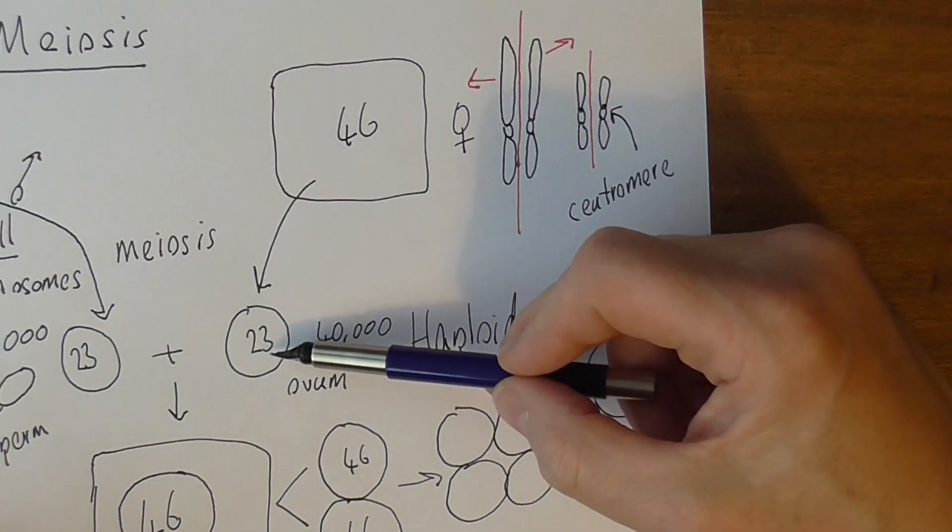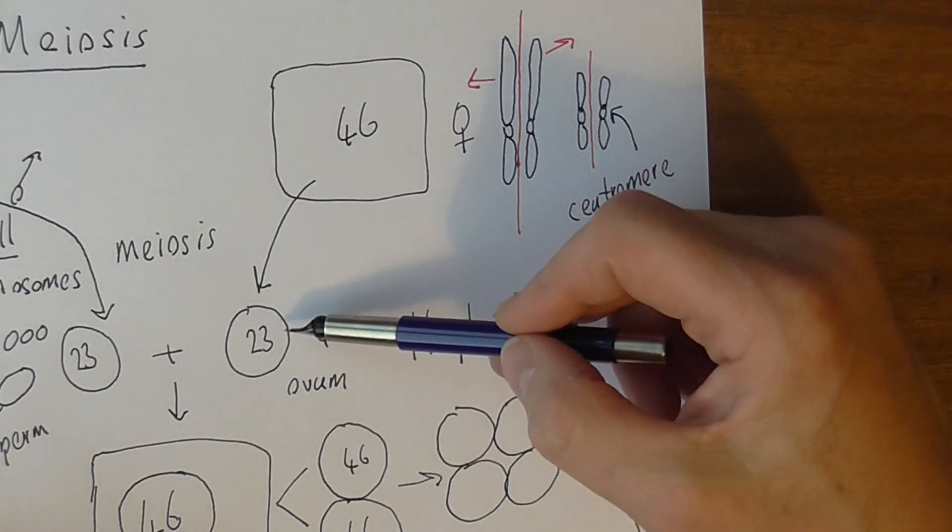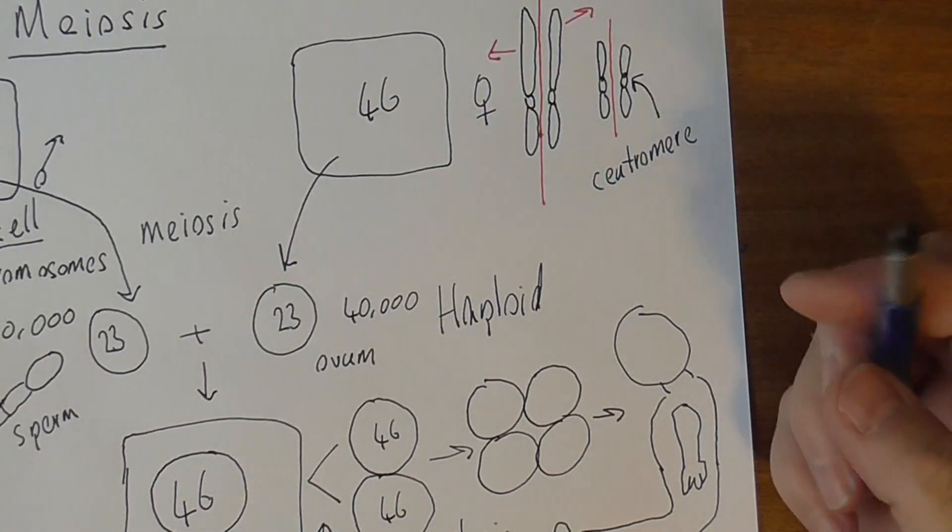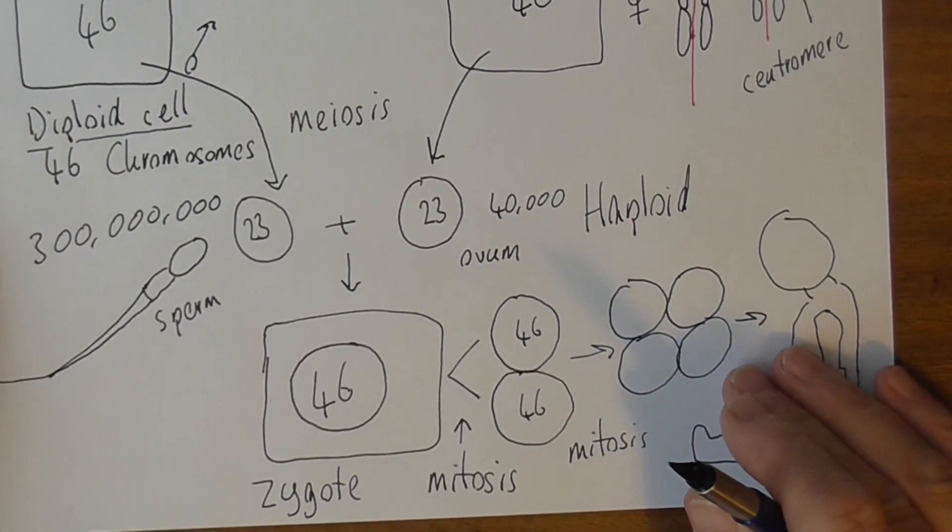So it's not 23 random chromosomes, it's one chromosome from each pair that ends up in this gamete, the cell that produces the next generation.